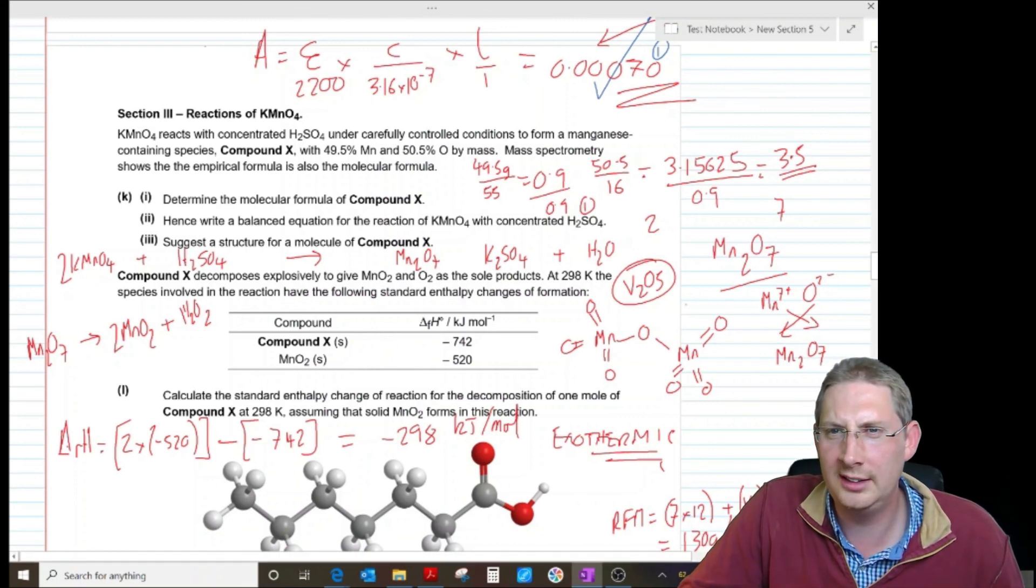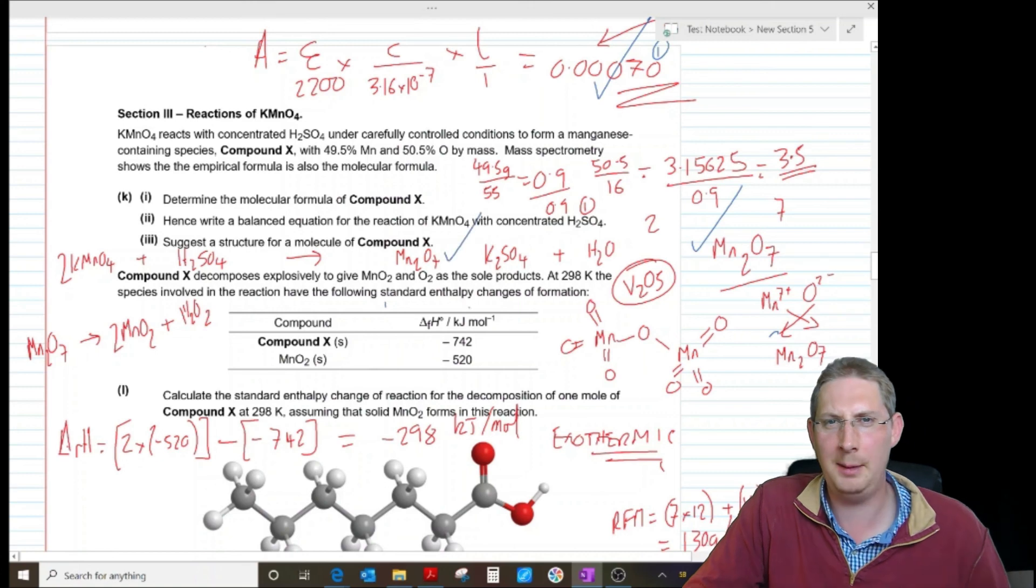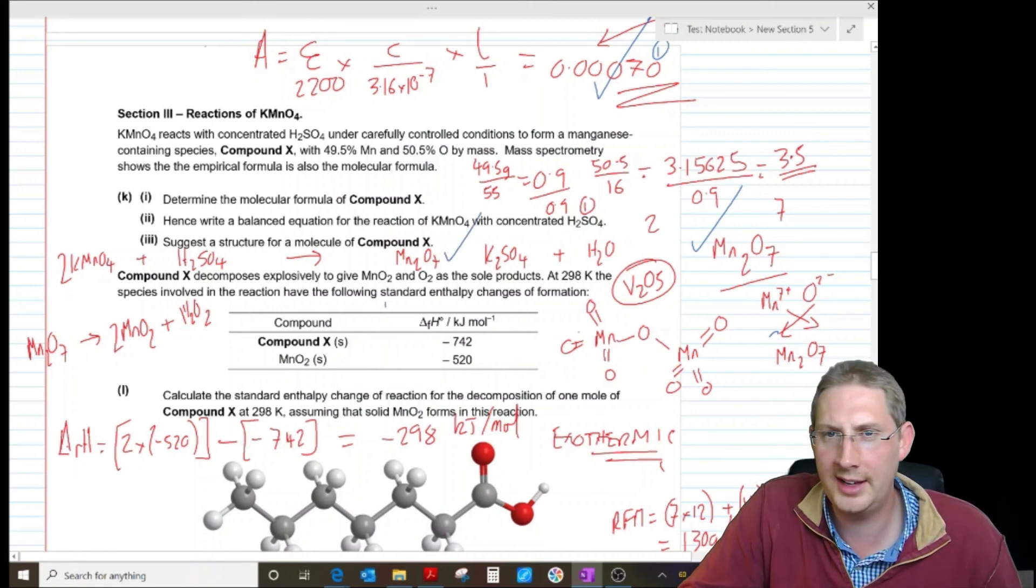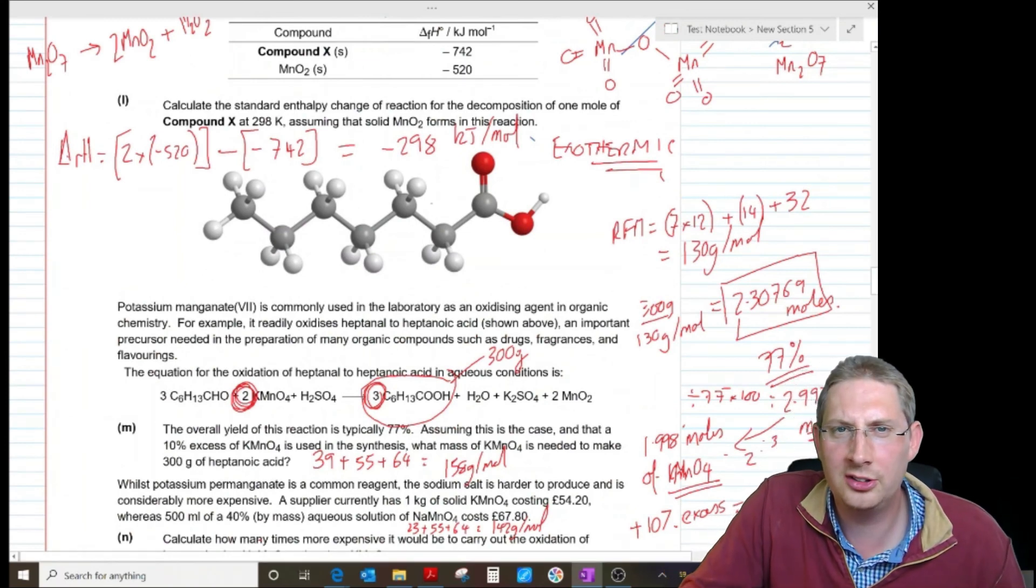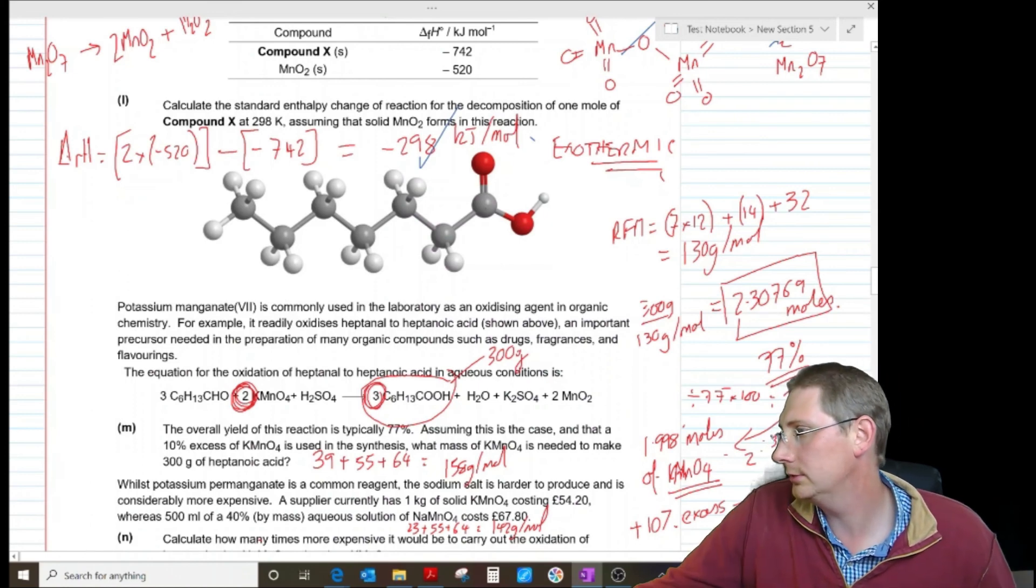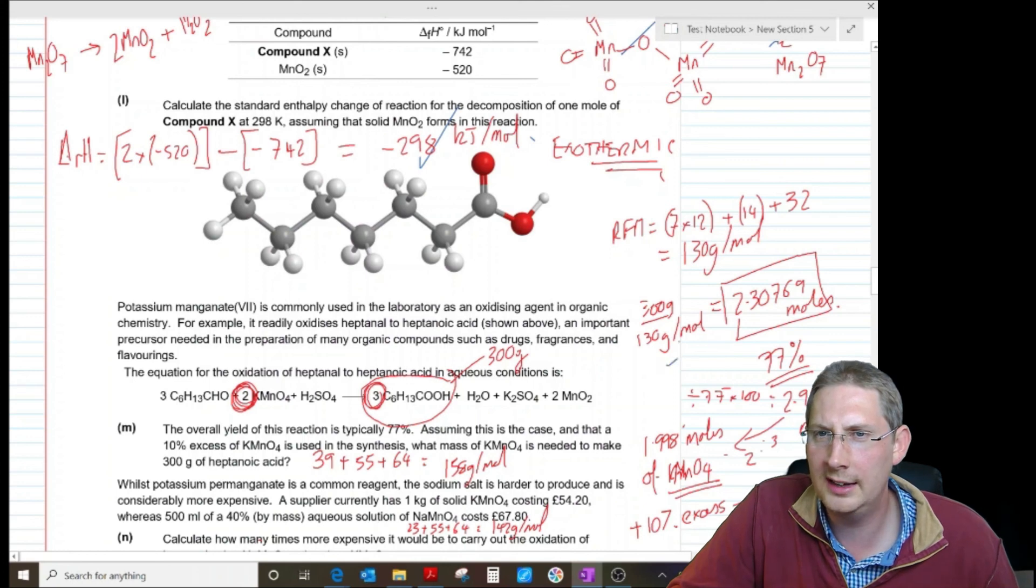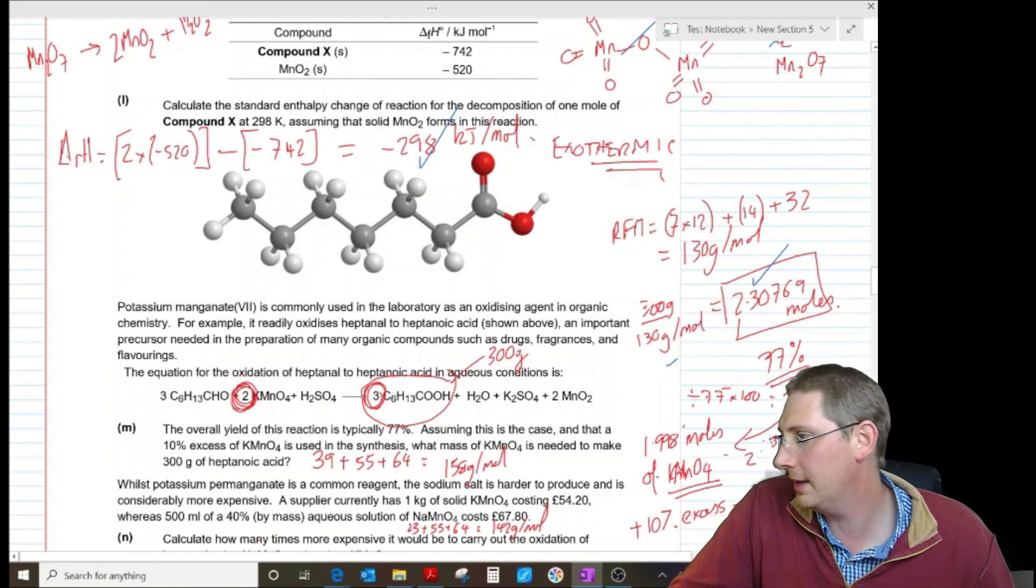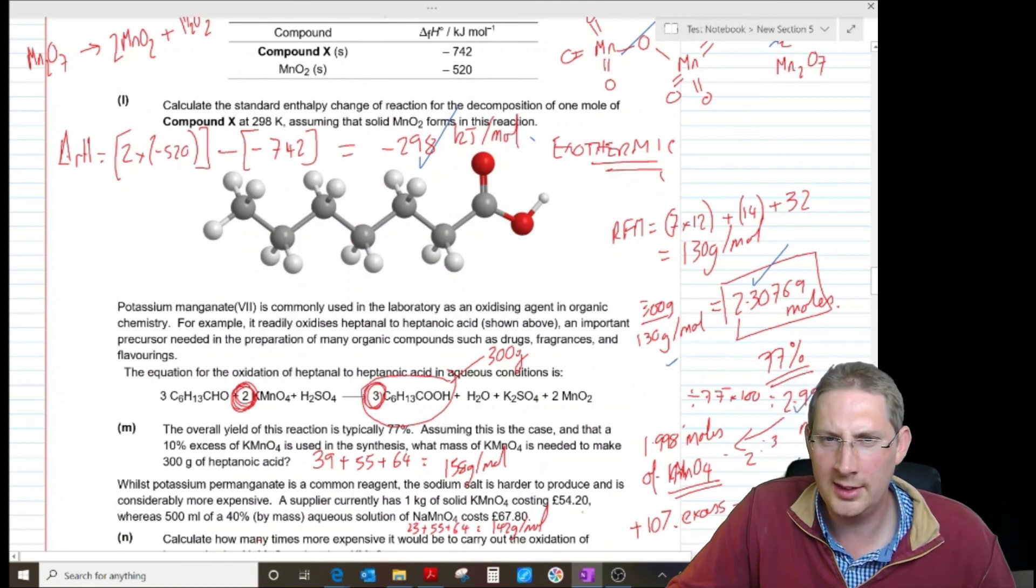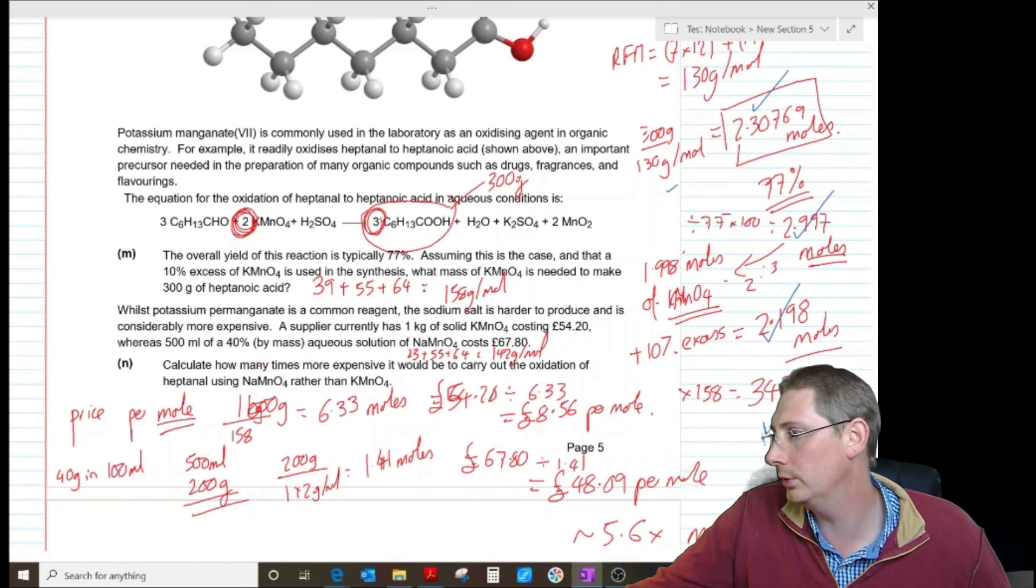Moving on. Yeah, Mn2O7 was indeed the correct answer for this. The balanced equation, 2KMnO4, H2SO4, K2SO4, water and this compound X. Yeah, absolutely. That was right. Drawing a structure of compound X. That was absolutely right there. Yeah, no problem there. Standard enthalpy change of reaction. Minus 298. Absolutely. That was right. Mass of potassium manganate needed. There was one mark for 2.3 over here. There was one mark for rounding that up to work out the number of moles that you needed to attempt to make. There was one mark for getting down to here. And there was one mark for the final answer, 347 grams. So that was a lot of marks there for stuff that actually is fairly straightforward A-level chemistry.